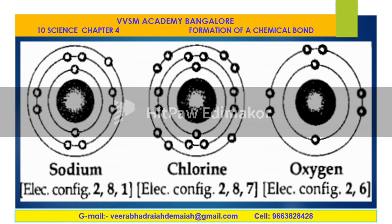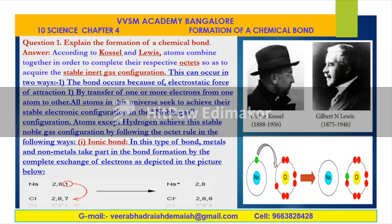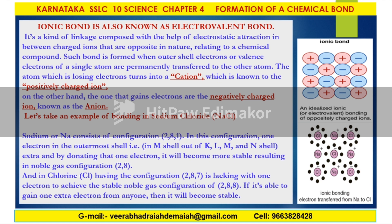This is all about ionic bonds. To explain the formation of a chemical bond: according to Kossel and Lewis, atoms combine together in order to complete their respective octets — that is, the octet configuration, which is the S2P6 configuration. This is Walther Kossel and Gilbert N. Lewis, who gave the explanation that atoms combine together to complete their respective octets so as to acquire the stable inert gas configuration. Ionic bond is also known as electrovalent bond — a linkage formed by the electrostatic attraction between oppositely charged ions relating to a chemical compound.